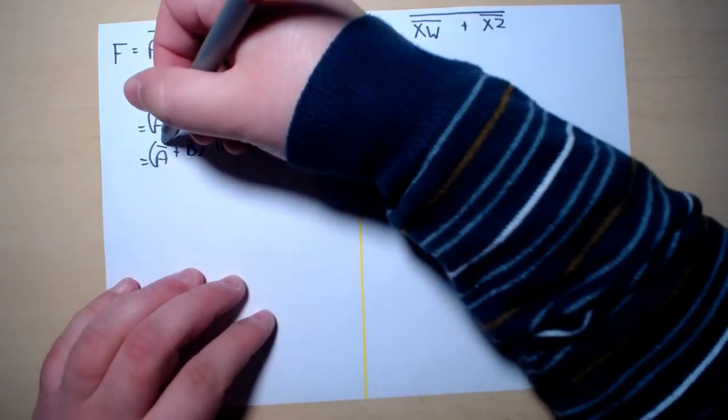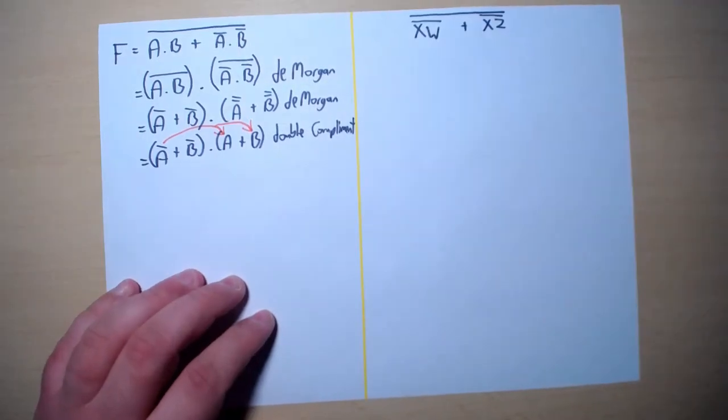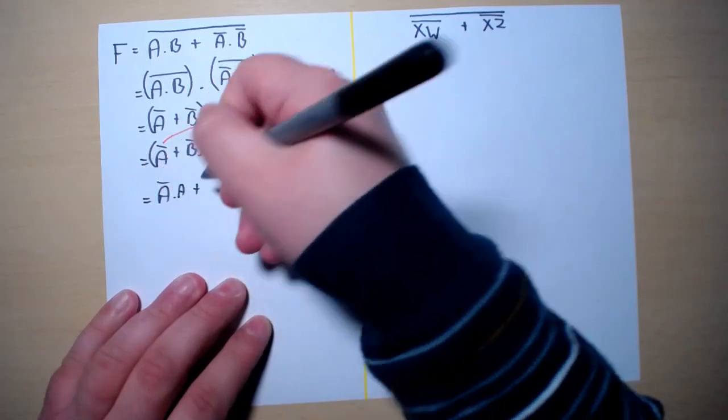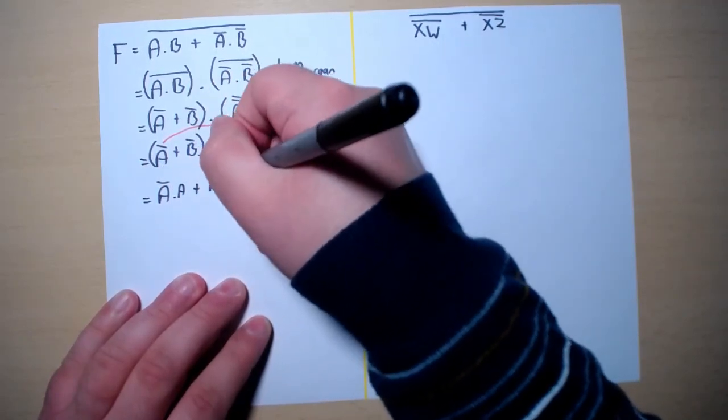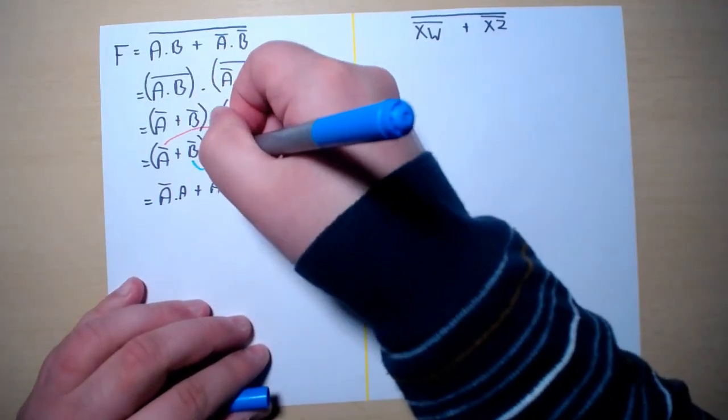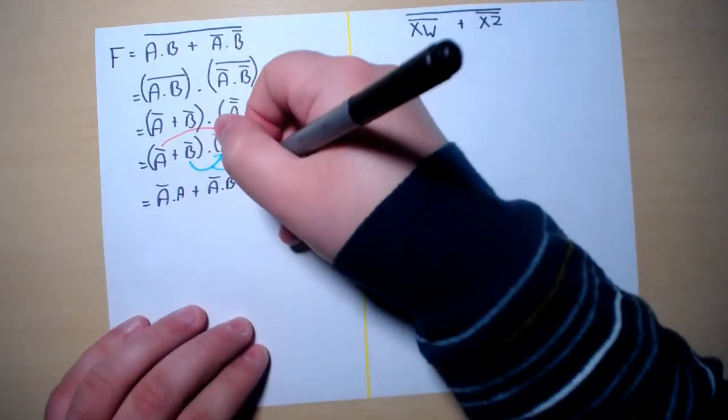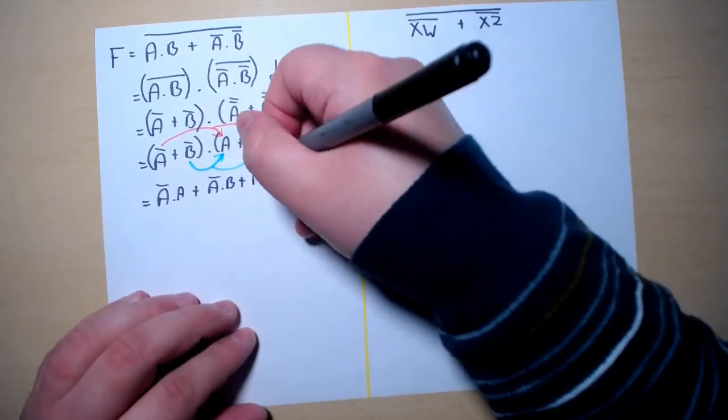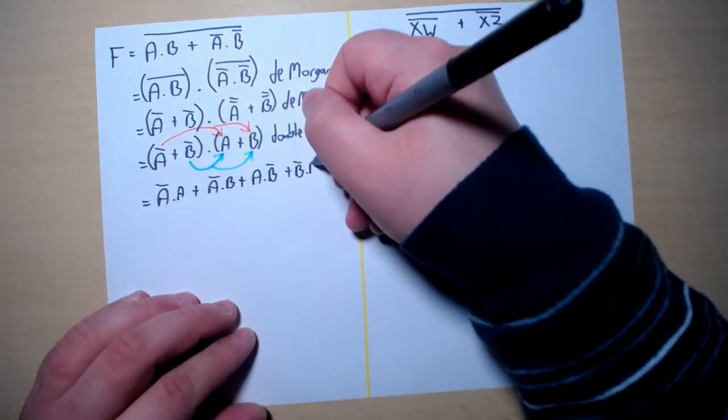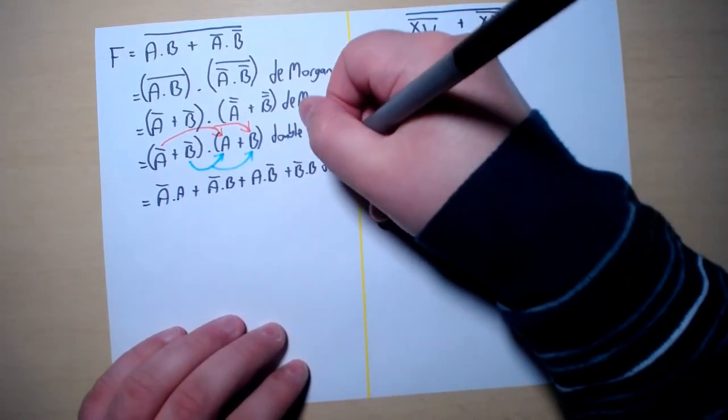So I am going to AND this A naught with the A and the B to get A naught and A or A naught and B. And then I am also going to AND this B naught with that A and with that B to get A and B naught or B naught and B. Since we have expanded brackets, we have used the distributive law.